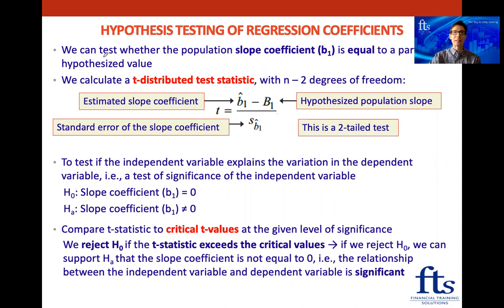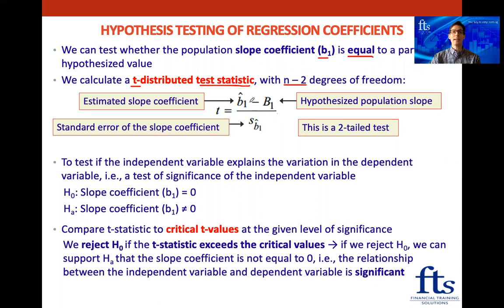We can test whether the population slope coefficient b1 is equal to a particular hypothesized value. We calculate a t-distributed test statistic with n minus two degrees of freedom — n is our number of observations, and we subtract two because we have the intercept and one independent variable. The formula takes our estimated slope coefficient b1-hat, subtracts the hypothesized slope, and divides by the standard error of the slope coefficient.